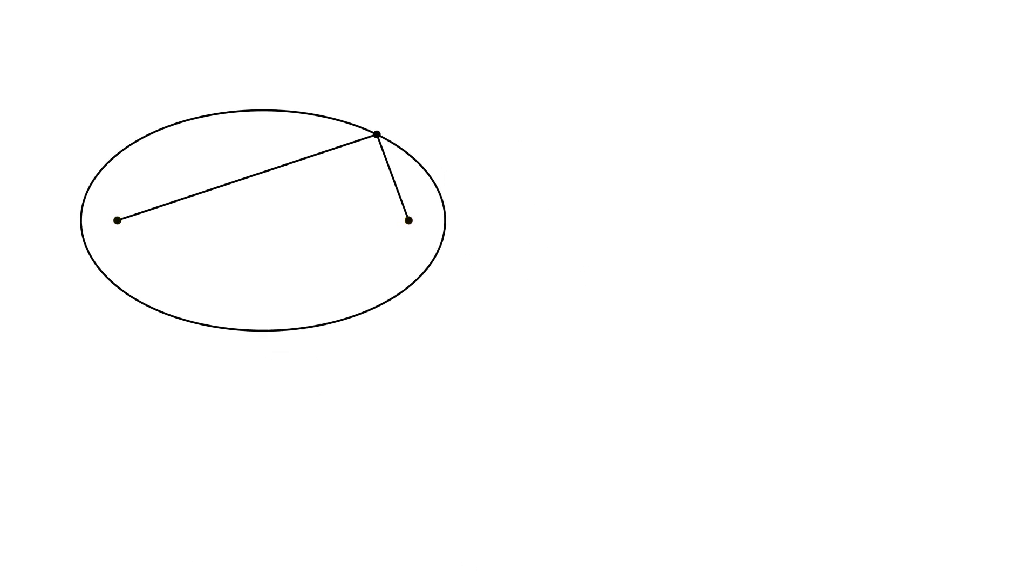The two points where we pin the ends of the string will denote by F1 and F2 and we call them the focal points of an ellipse. Let's denote the point on the ellipse by P. Now, F1P plus F2P is the same for all points P on the ellipse because it's equal to the length of the string. So F1P plus F2P is constant and for now we'll say that equals some value d.